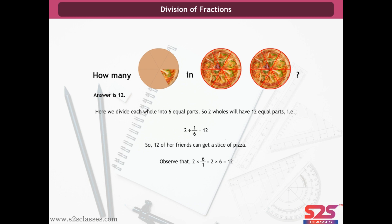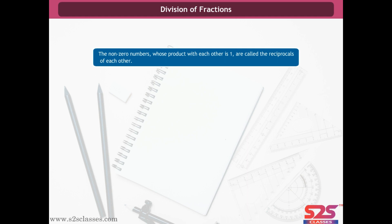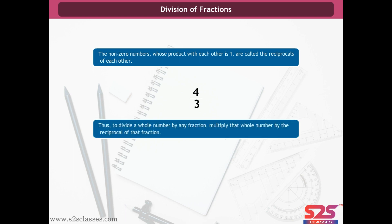The number 6/1 is obtained by interchanging the numerator and denominator of 1/6, i.e., taking its reciprocal. Non-zero numbers whose product is 1 are called reciprocals of each other. For example, 3/4 and 4/3 are reciprocals. To divide a whole number by a fraction, multiply that whole number by the reciprocal of the fraction. For example, 7 ÷ 2/5 = 7 × 5/2 = 35/2; and 6 ÷ 5 and 1/3 = 6 ÷ 16/3 = 6 × 3/16 = 9/8.